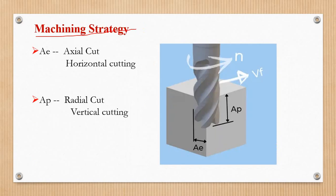Fourth is the machining strategy. We use better machining — two types: A-E and A-P. A-E is an axial cut, which is horizontal. A-P is a vertical radial cut. VF means feed rate. We use speed and feed — that will be covered in a separate video.